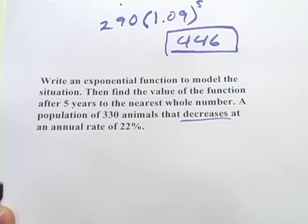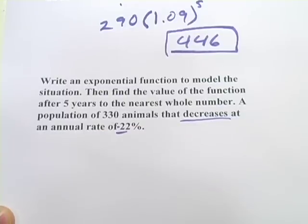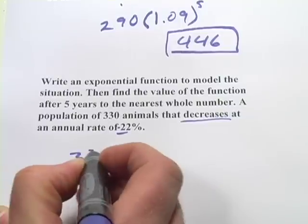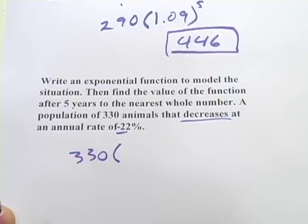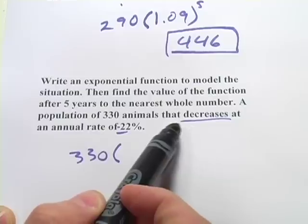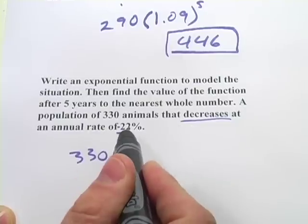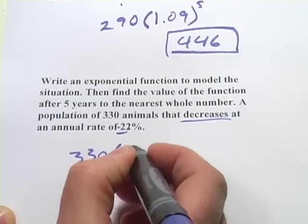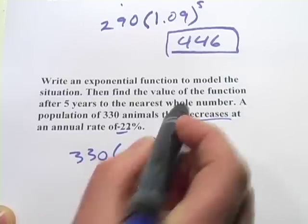Now, this one's a little bit different, because it's a decrease. So this 22% is really going to be negative 22%. So we start with 330, our initial amount. We multiply by 1 plus the percent increase. In this case, it's a decrease, so we actually subtract. So 1 minus 0.22 is actually going to be 0.78, and then we raise that to the power of the number of years that go by.